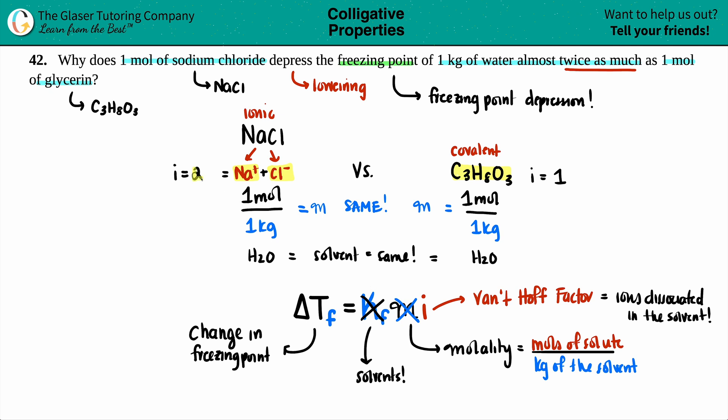And that is why two versus one, this will depress the freezing point two times more. So why does one mole of sodium chloride depress the freezing point twice as much? Because you have an i value of two, you have twice as many ions in solution. And that is the answer.